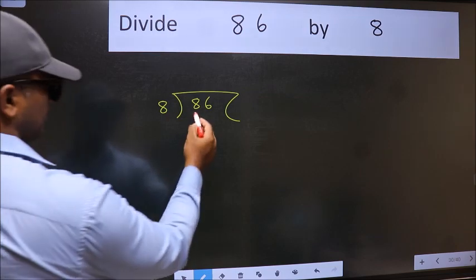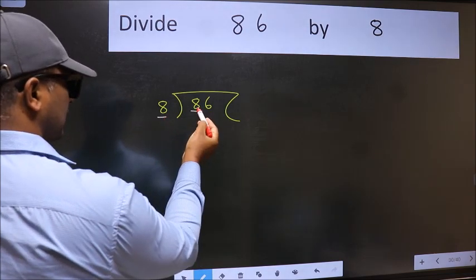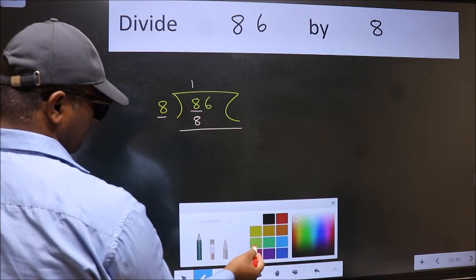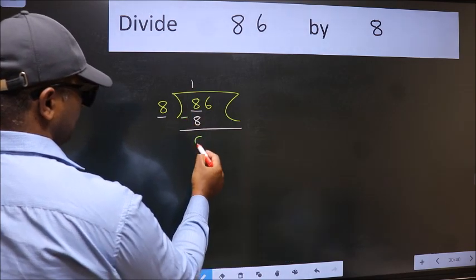Here we have 8 and here 8. When do we get 8 in 8 table? 8 once 8. Now we should subtract. We get 0.